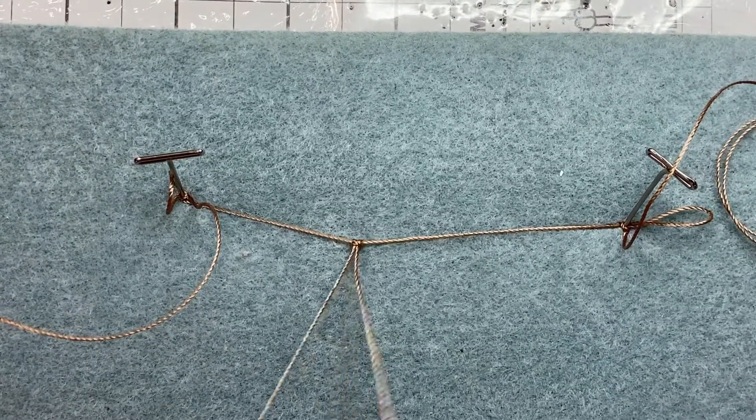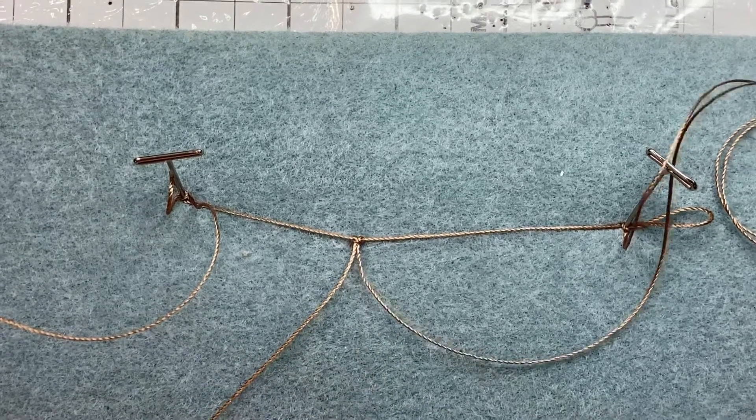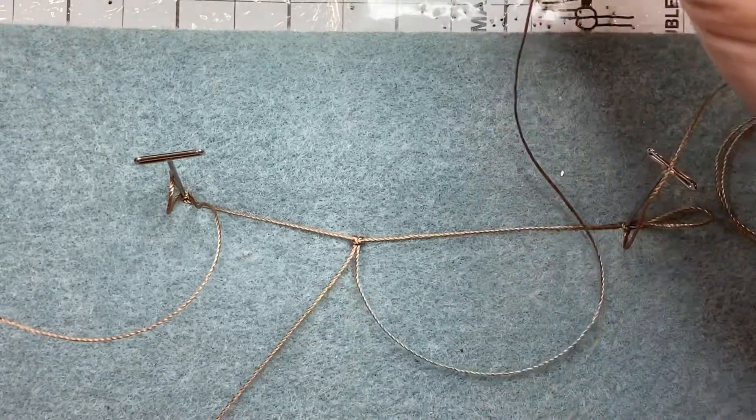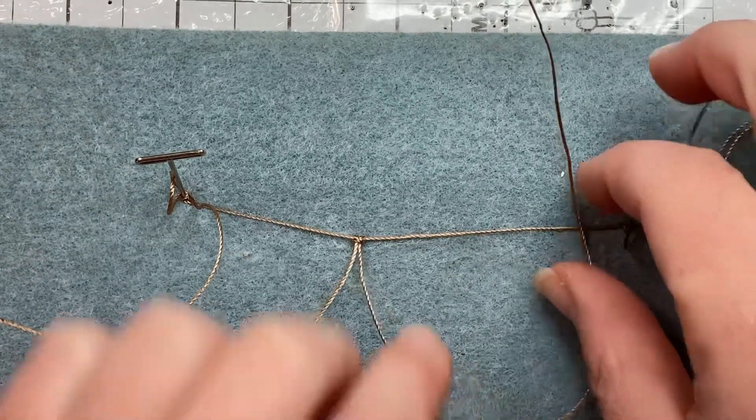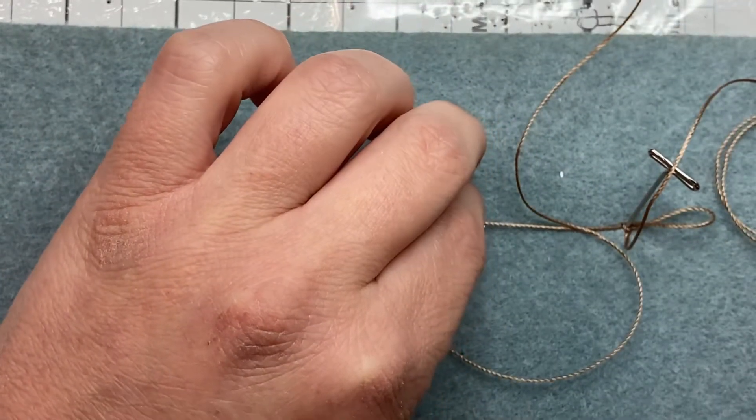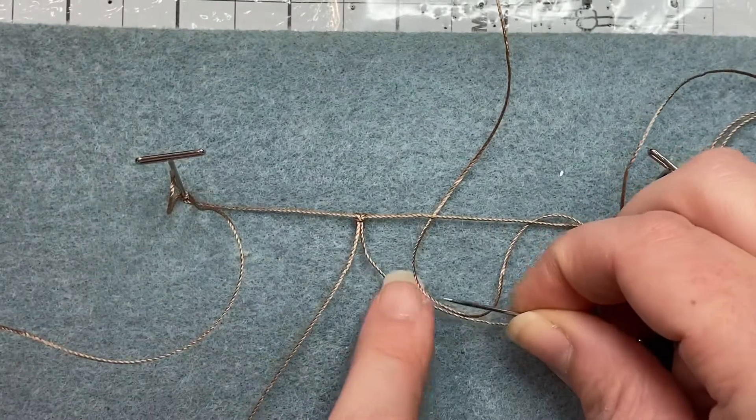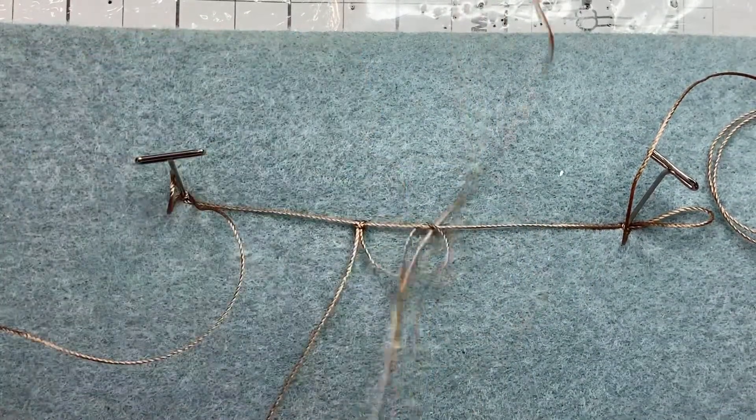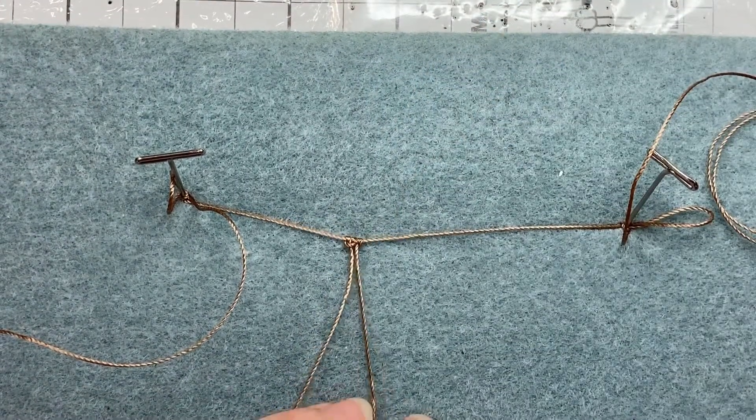Now we're going to create a series of lark's head knots by using the same cord that we've been working with. So you're going to take the right hand side and lay it over top of this cord here. You're going to pull through. Sometimes it helps to use your T-pin. You're going to pull through that cord through that loop you've created. And pull to tighten.